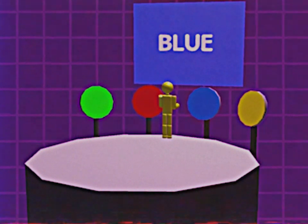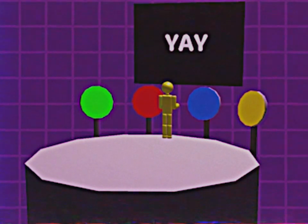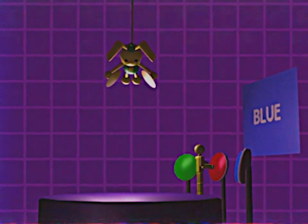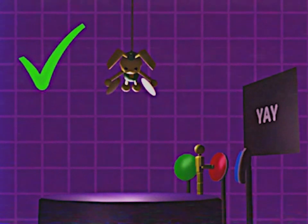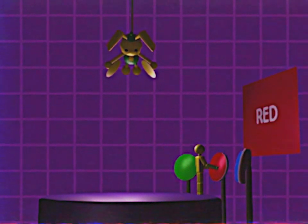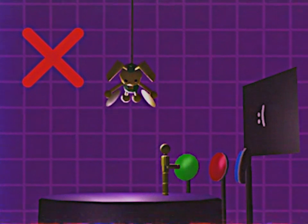Bunzo will slowly lower towards you. When you complete a color pattern correctly, Bunzo will rise back up. When you input a pattern incorrectly, Bunzo will lower towards you faster.